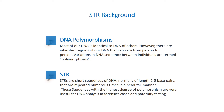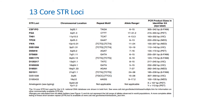STRs are short sequences of DNA, normally of length 2-5 base pairs, that are repeated numerous times in a head-tail manner. These sequences with the highest degree of polymorphism are very useful for DNA analysis in forensic cases and paternity testing. Although the human genome contains thousands of STR markers, only a small core set of loci have been selected for use in forensic DNA and human identity testing. The 13 core STRs used for the US national DNA database are shown in the chart.